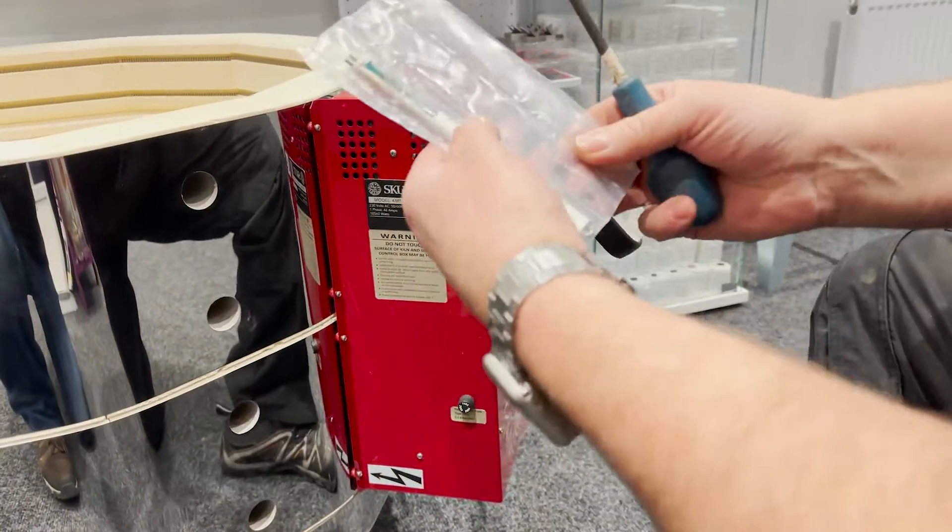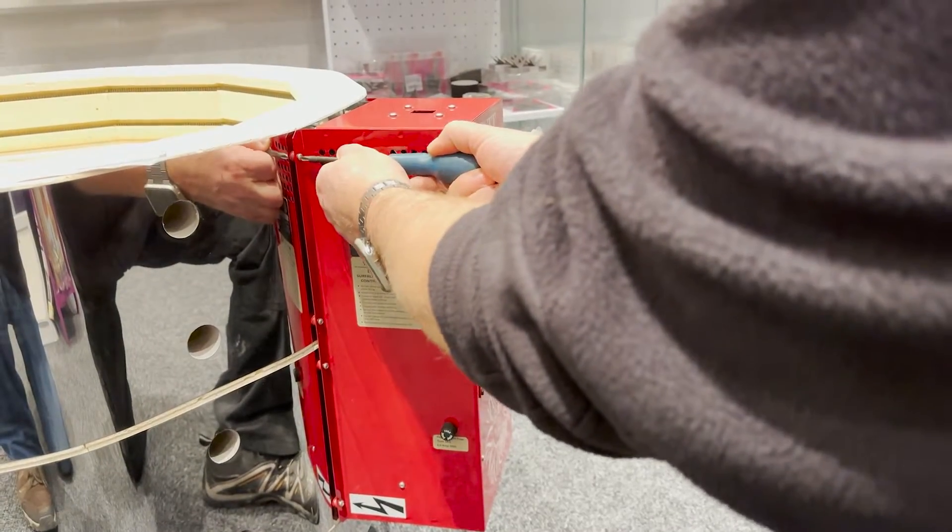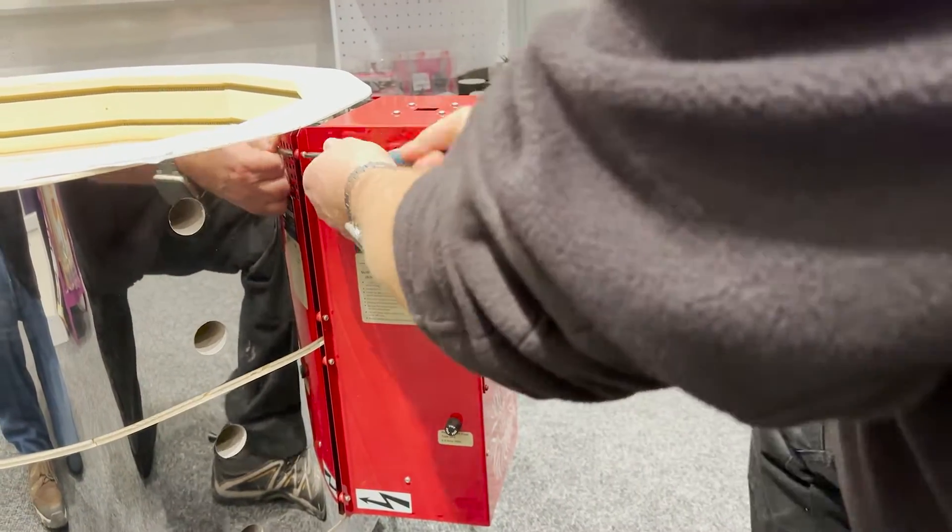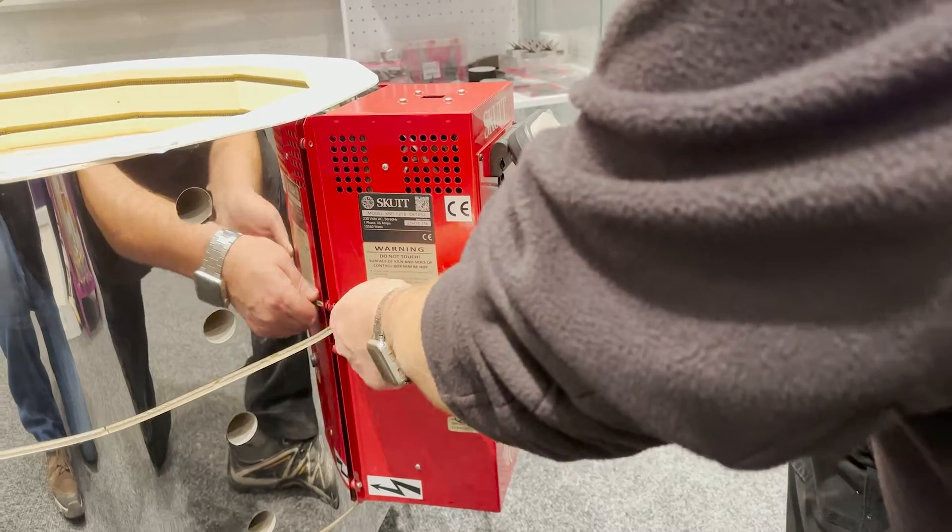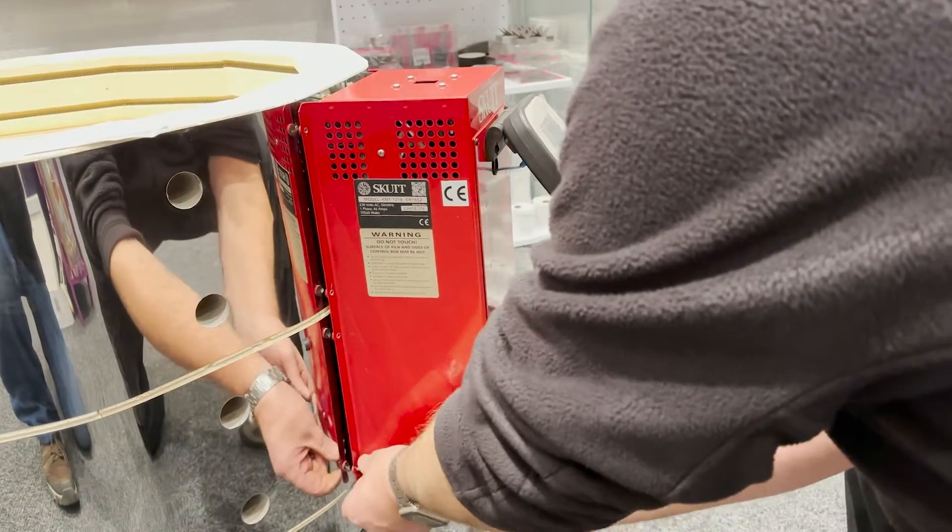I'm changing the KM thermocouple. Undo the screws down the side of the red box - they're always on the left. Swing the box open.